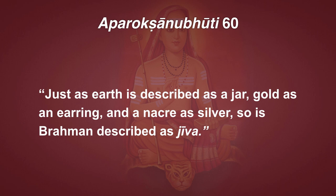This is what we're after. This enlightenment is when the jar is broken — when the artificial container called jiva is no more, when it loses its form, the body, the mind, and it is reabsorbed into its ingredient, Brahman. The next verse reads: Just as earth is described as a jar, gold as an earring, and nakre as silver, so is Brahman described as jiva.